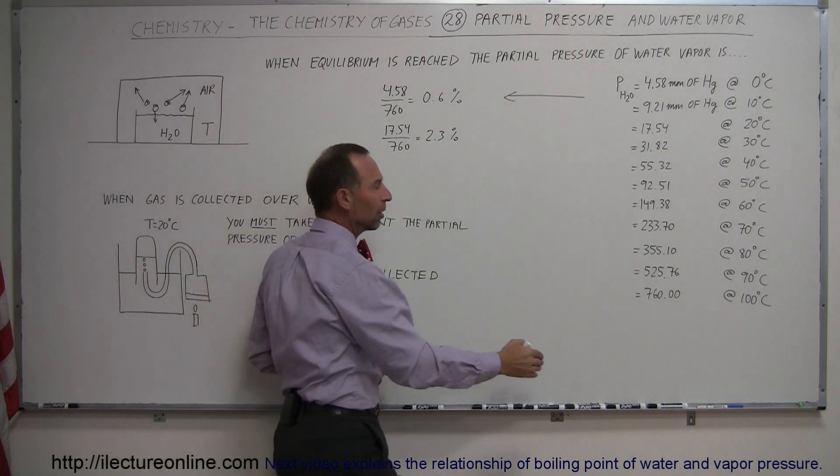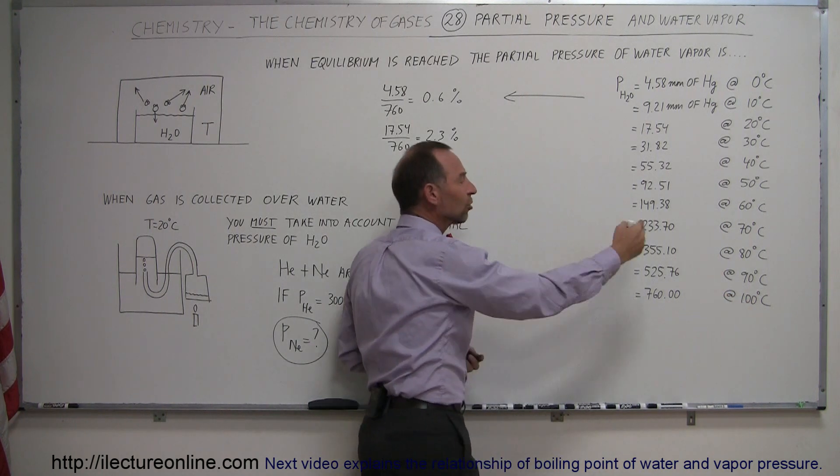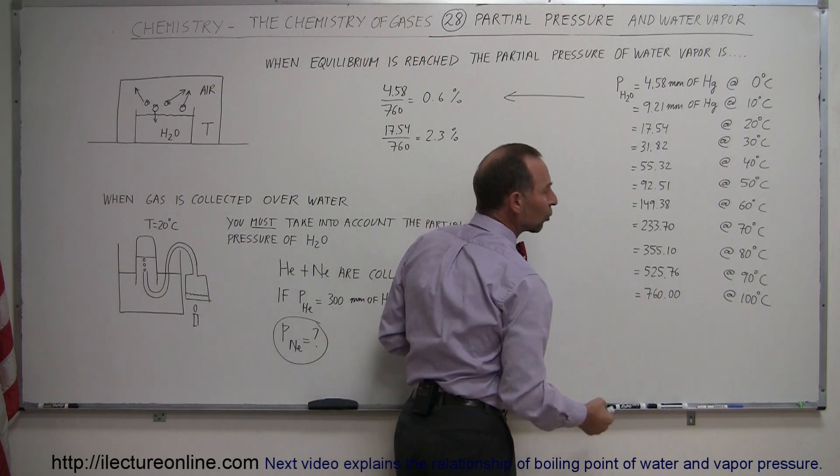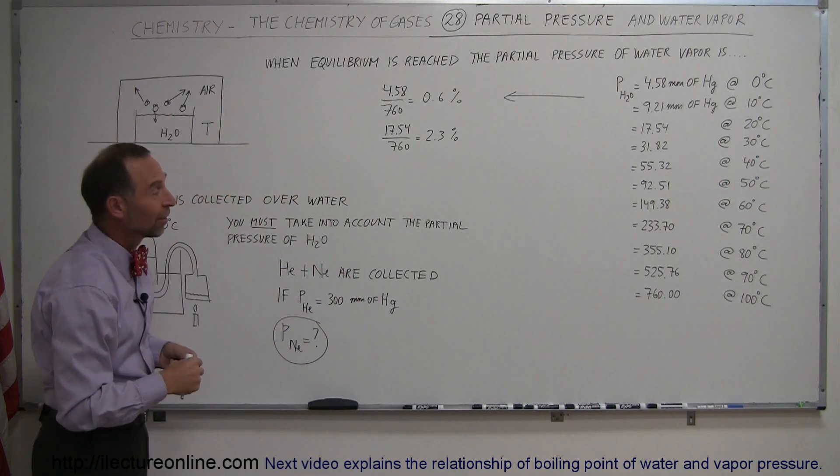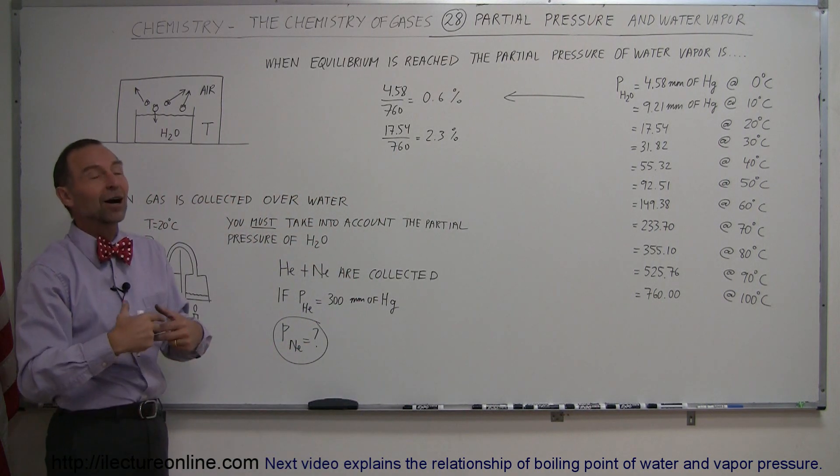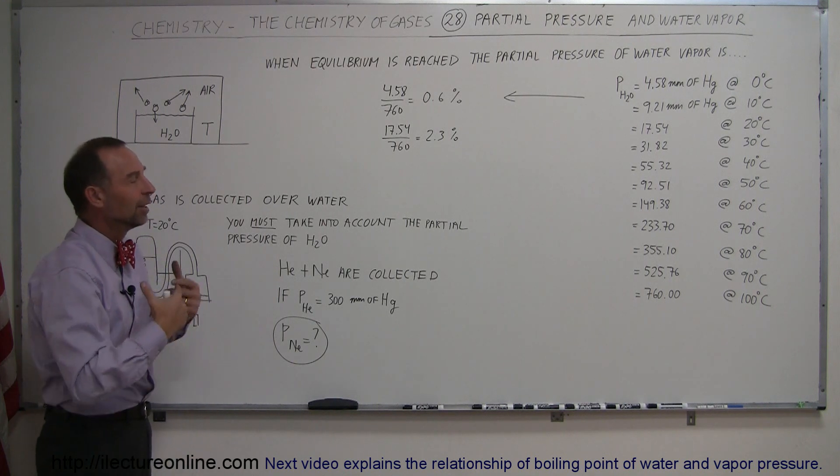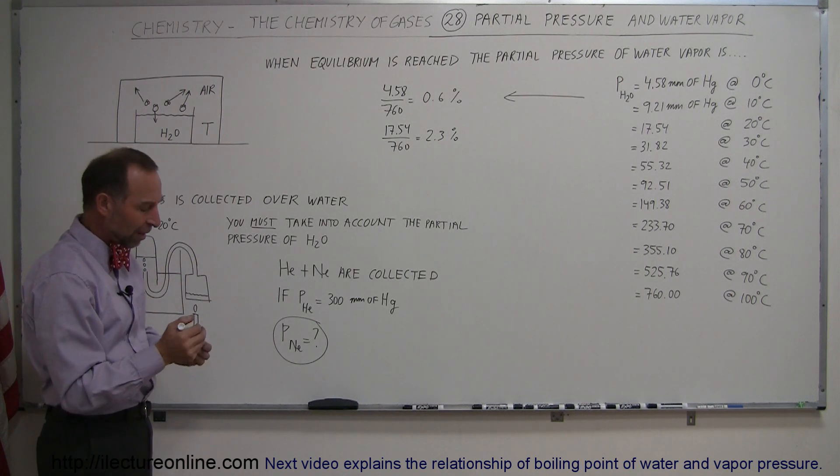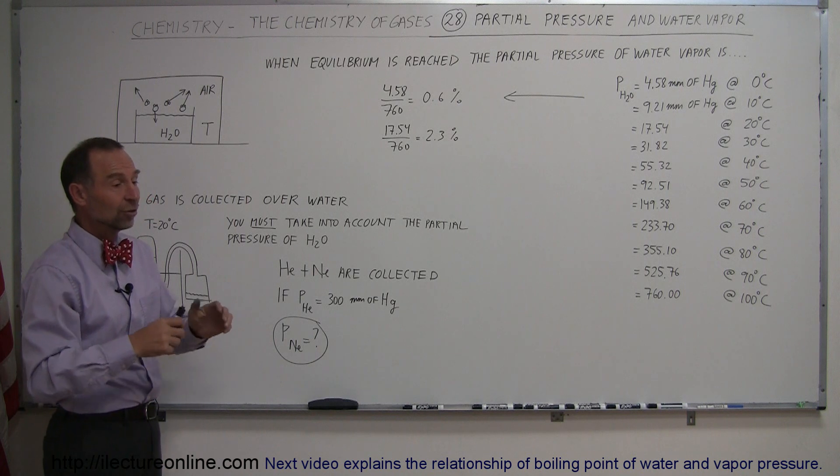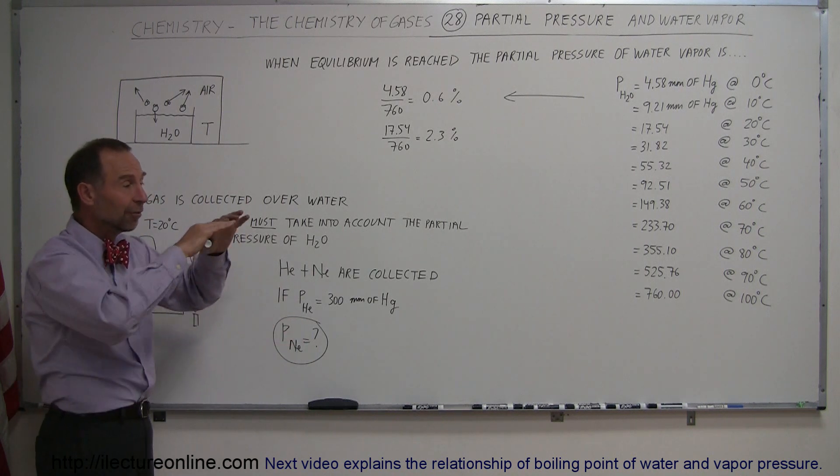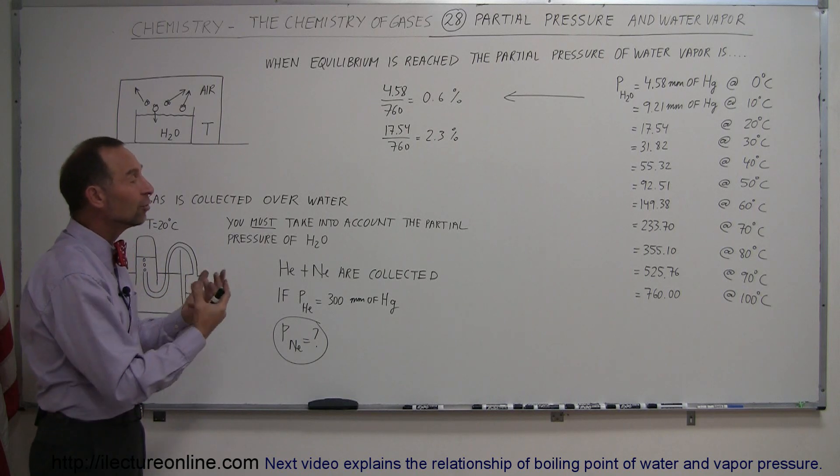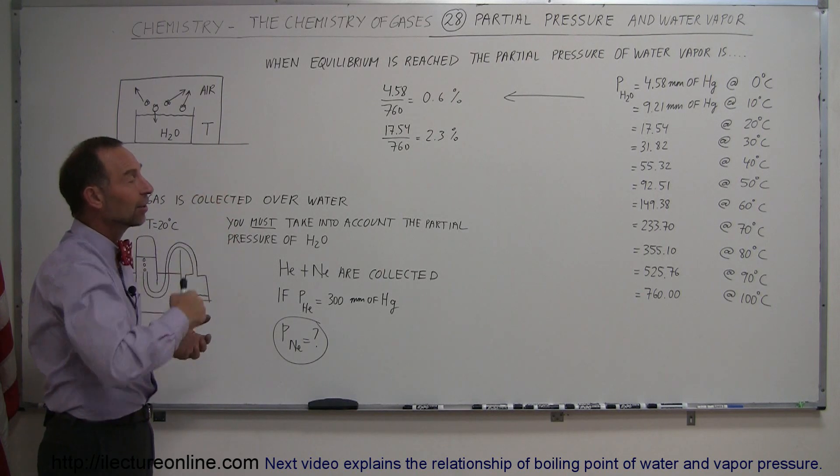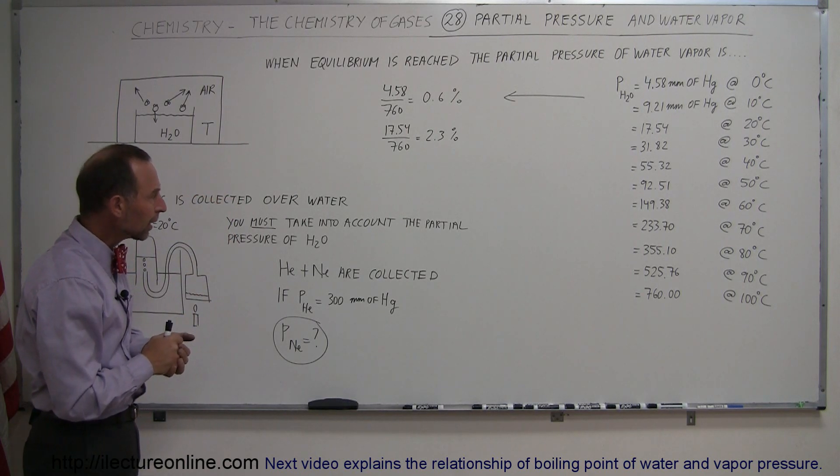And notice when you get all the way to 100 degrees centigrade, this will just continue until the total partial pressure of water vapor is 760 millimeters of mercury, which would mean 100% water vapor. That's of course never going to happen; we're not in a situation where that is possible. But if you take water and you continue boiling it in a very small closed environment, you'll push more and more of this water vapor into the air and you'll reach a higher and higher saturation point.